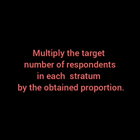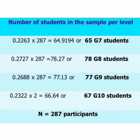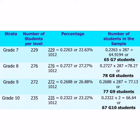Next, we multiply the target number of respondents in each stratum by the obtained proportion. The calculated proportion is multiplied by the total target number of respondents, which is 287 as identified using the Slovin's formula. For Grade 7, 0.2263 multiplied by 287 gives 64.9, which rounds to 65 students.